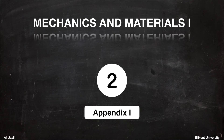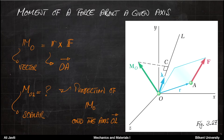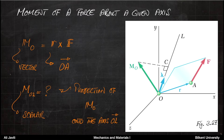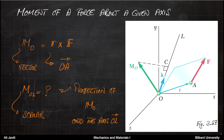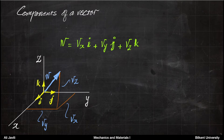Hello everyone. In this lecture I want to talk about one of the concepts in Lecture 2 that is apparently not clear, and some of you asked some questions. In particular, we want to talk about the moment of a force about a given axis. If you remember, this was figure 3.27 from the Beer & Johnston book. The question was: if you know the moment with respect to a point — that's a vector — what is the meaning of the moment with respect to an axis OL? We learned that it is essentially the projection of M_O onto the axis OL. I'll try to explain it now from a different perspective.